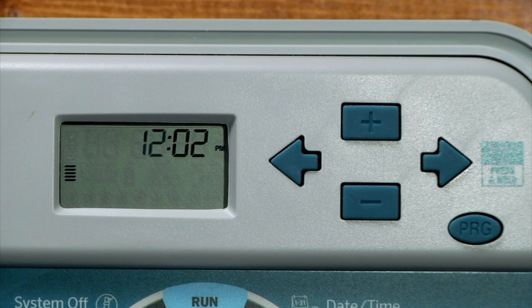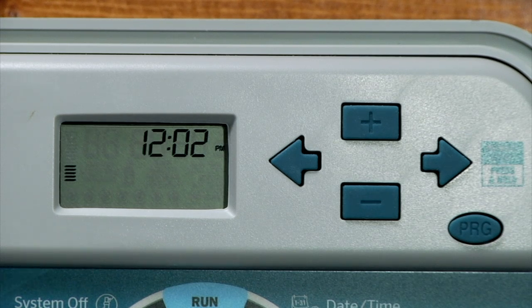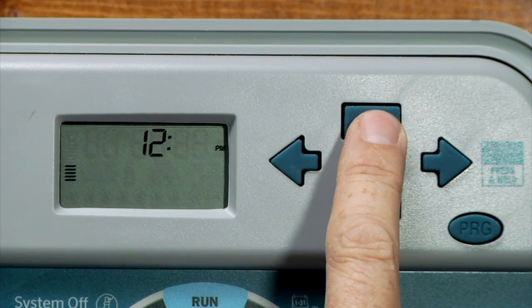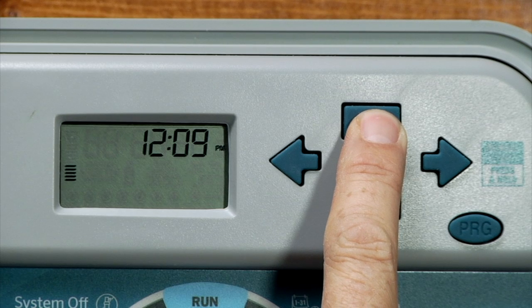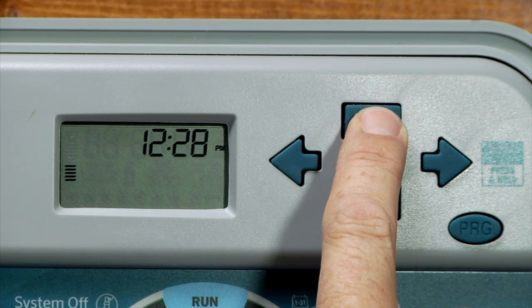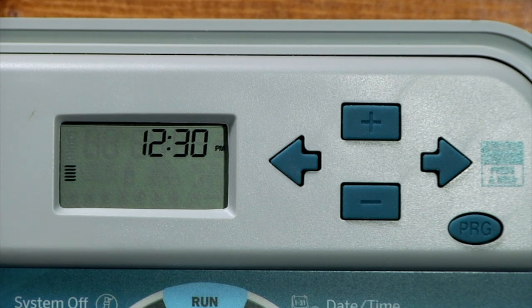Then we use the same right arrow to advance to the next function, which is the hour. It happens to be about 12 o'clock right now, and we'll use the right arrow to go to the minutes. In reality, it's about 12:30, so I'll advance up to 12:30, and that shows us here in the screen that we've got 12:30 PM.